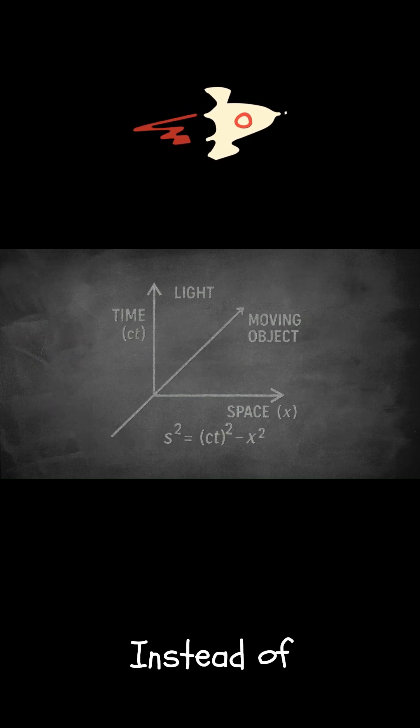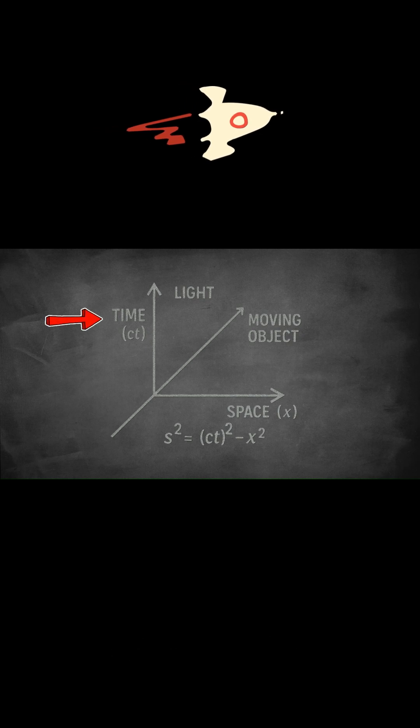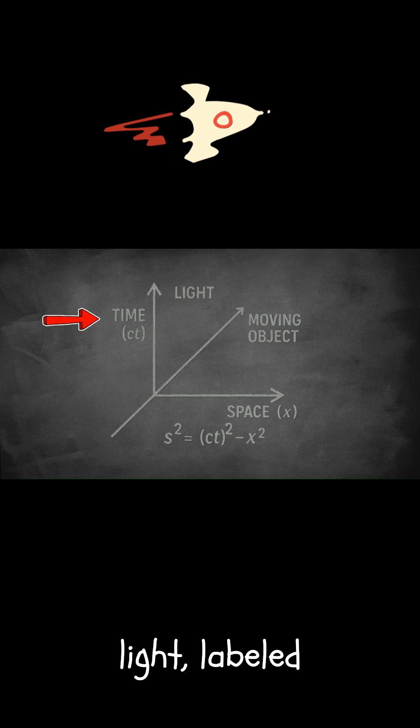This is a Minkowski diagram. Instead of just space, this graph includes time. Specifically, time multiplied by the speed of light, labeled here as CT.